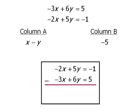So to begin, we have negative 2x minus negative 3x. This gives us x. Next we have 5y minus 6y which is equal to negative y. And finally we have negative 1 minus 5 which is equal to negative 6.